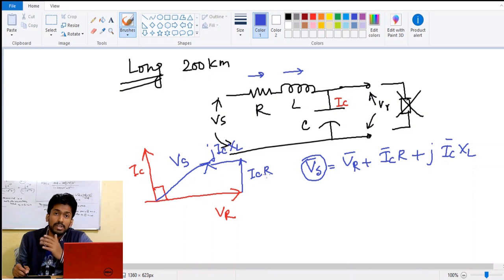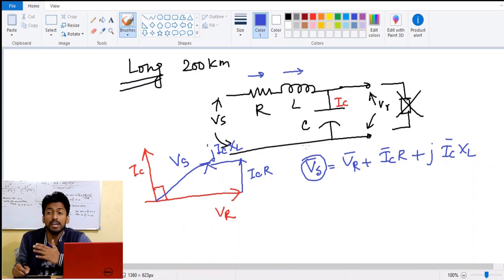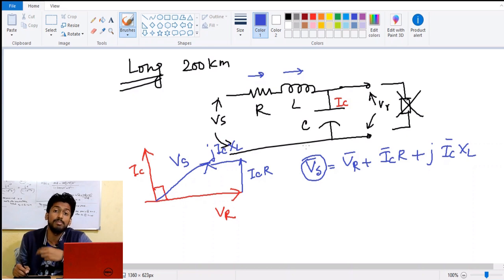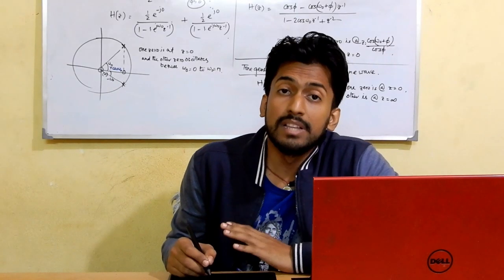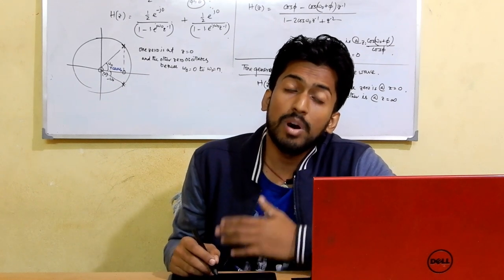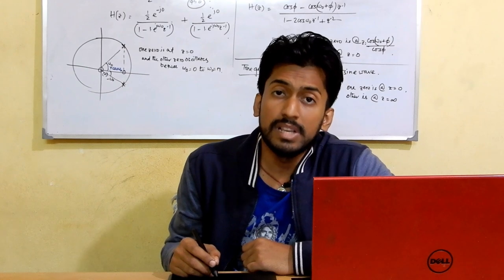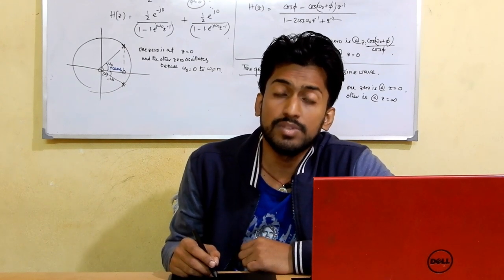This phenomenon is predominantly valid for long transmission lines and also for loads that are capacitive in nature. Whenever a synchronous machine or synchronous motor is loaded to a capacitive part, we can have this kind of phenomena — the receiving end voltage or terminal voltage is actually larger than the sending end voltage or source voltage. For today, this is it. In the next video I will be discussing more phenomenal effects of transmission lines. Thank you for watching — if you like the video, please subscribe to the channel.